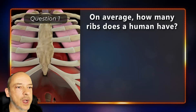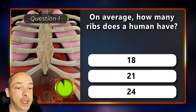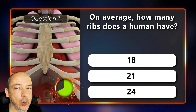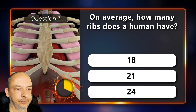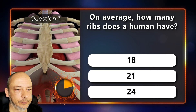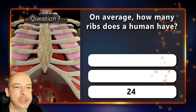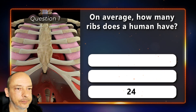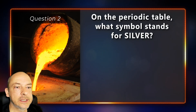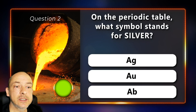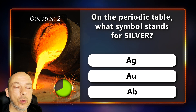Question one: on average, how many ribs does a human have — 18, 21, or 24? The answer is 24. On the periodic table, what symbol stands for silver — is it AG, AU, or AB?